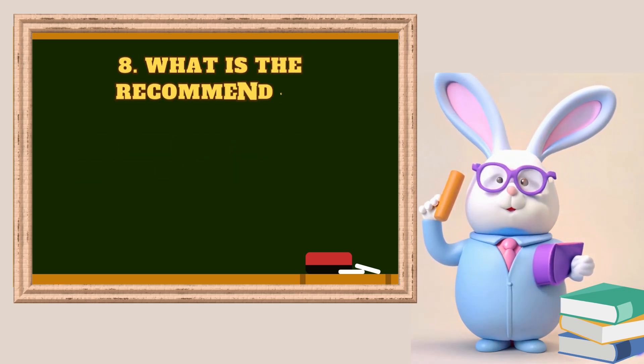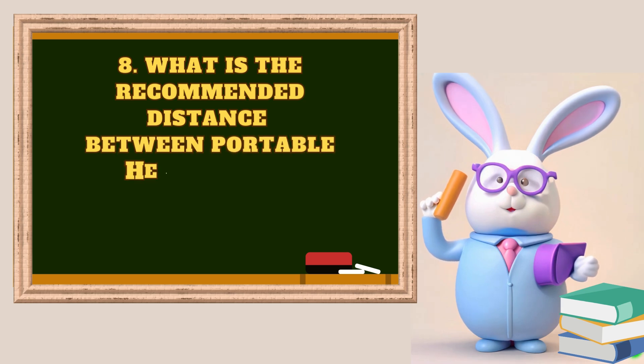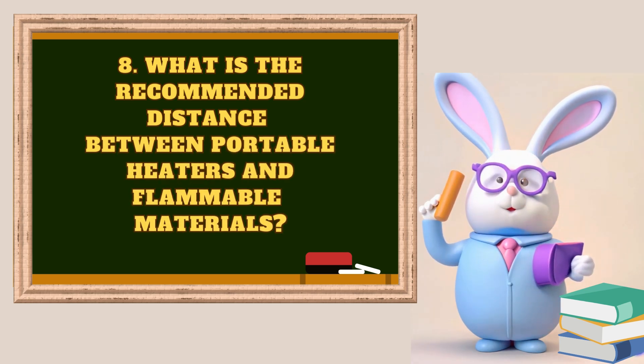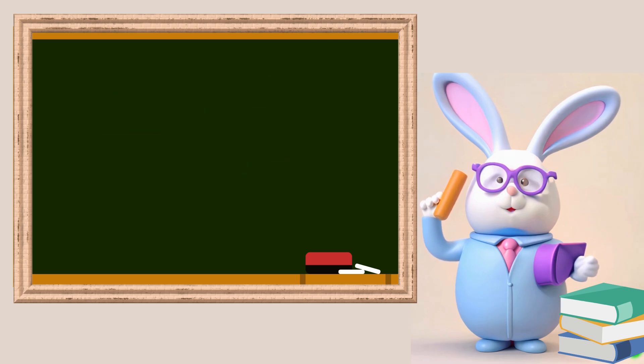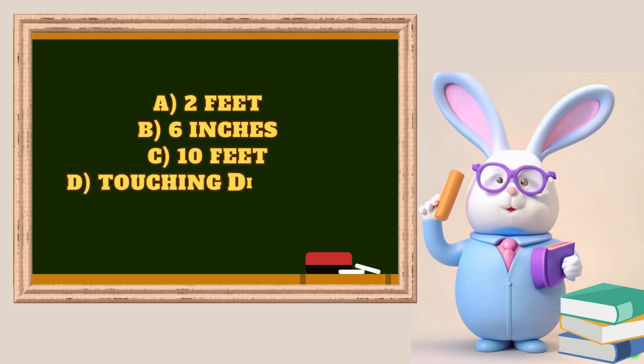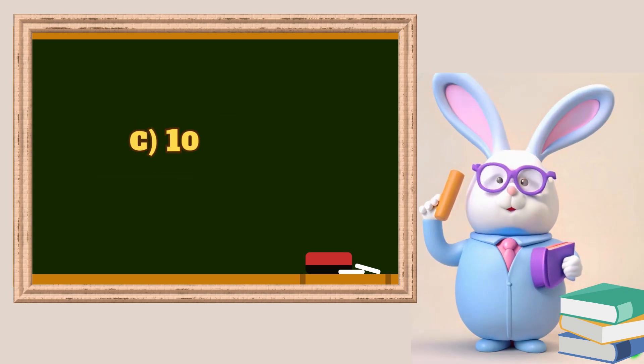Question 7: What is the recommended distance between portable heaters and flammable materials? A. 2 feet. B. 6 inches. C. 10 feet. D. Touching distance. The answer is C, 10 feet.